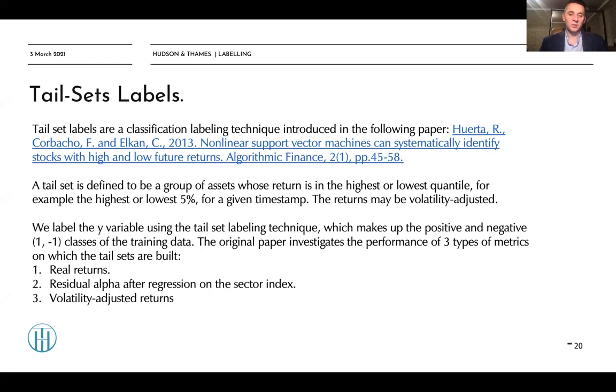For example, the highest or lowest 5% for a given timestamp, and the returns may be volatility adjusted. So if we actually start Googling so-called factor investing or long-short portfolios, there is a quite common approach. It is to rank our assets based on some factor value, for example, either size, momentum, or volatility. And you usually take long positions in your upper quantiles and take short positions in your lower quantiles. And this kind of strategy has generated so many various papers and it is quite well known and used approach.